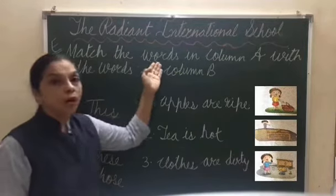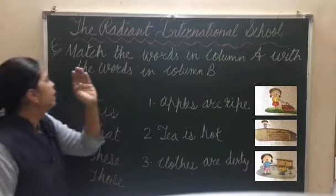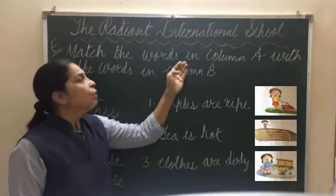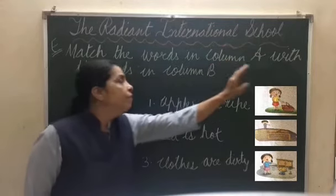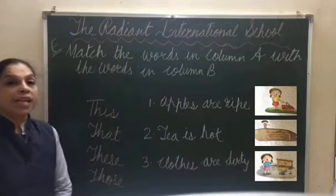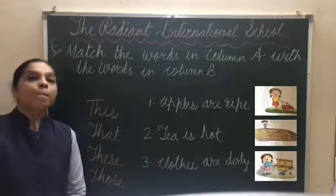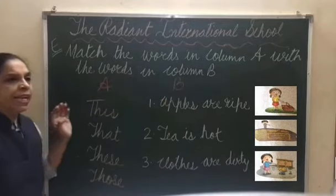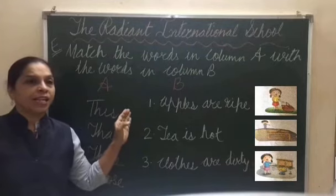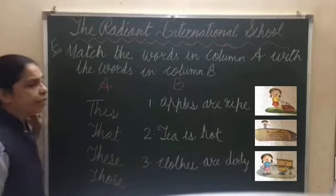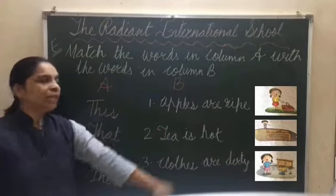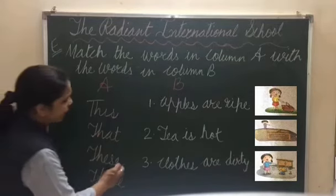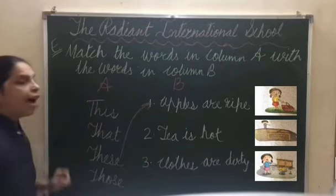Exercise E: Match the words in Column A with the words in Column B. We have to match the words from both columns. In the first picture, apples are near, so the sentence will be: 'These apples are ripe.'